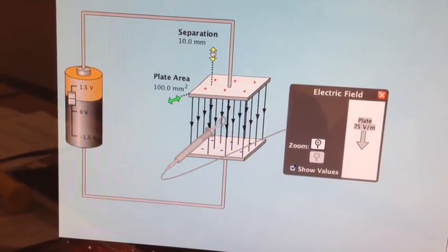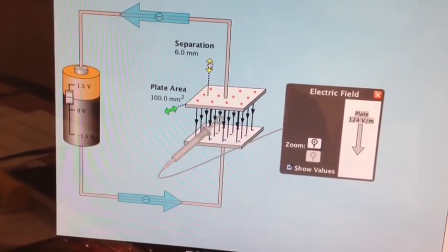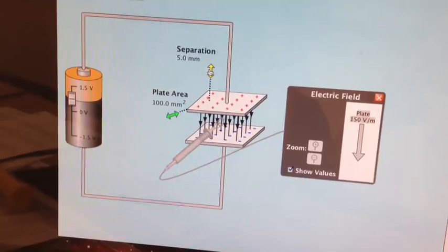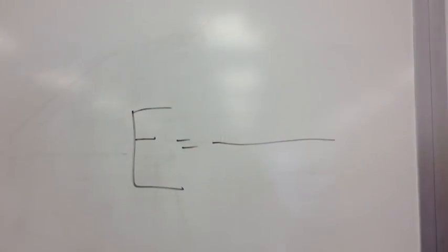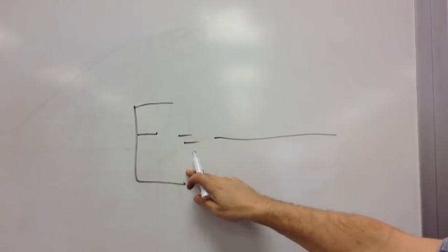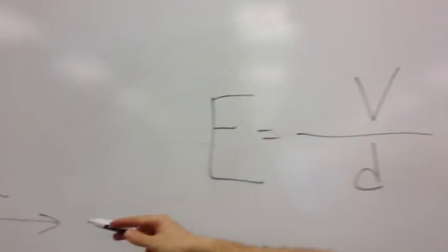The final factor is plate separation. And as I make the plates closer together, the electric field gets stronger. So let's go see what our formula will look like. The formula for electric field is going to be voltage over distance because we saw that distance was an inverse relationship and voltage was a linear relationship.